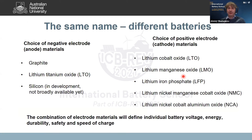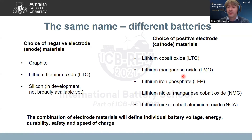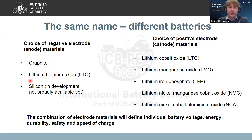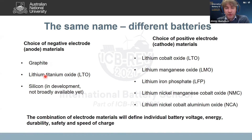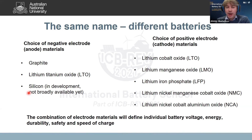Lithium-ion batteries is not one system but many systems with a common name, defined by which negative and positive electrode materials you choose. The vast majority — probably more than 95% — have graphite as a negative electrode. Lithium titanium oxide (LTO) can also be used. There is also silicon, currently under development, which is not yet broadly available commercially but feels like a technology that is coming very soon and will help increase the energy density of lithium-ion batteries.